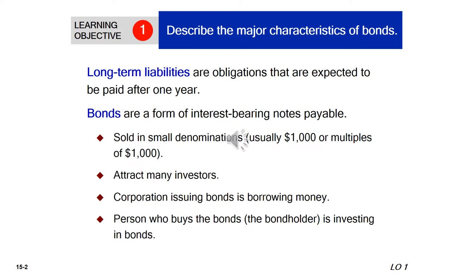Long-term liabilities include bonds, and bonds are simply a form of interest-bearing notes payable. These are loans given to borrowers by lenders. The person who issues and sells the bond is the borrower — usually a company or government. The person who buys and holds the bond receives regular interest payments and gets their money back at maturity; they are the lender or investor. Bonds are sold in small denominations, usually $1,000 or multiples thereof, and attract many investors because they are cash-generating investments.